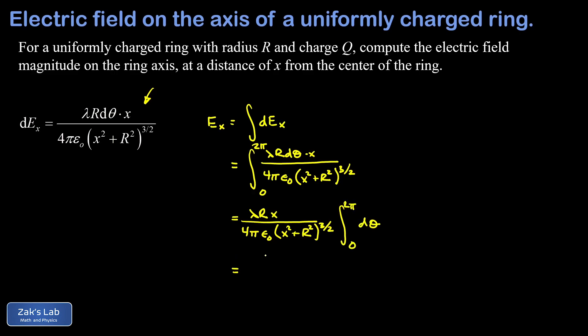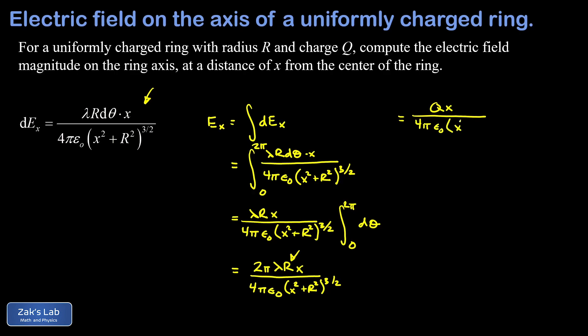We put 2π into the numerator and recognize that 2πR times lambda is just the total charge Q of the ring. So the electric field magnitude at a distance x from the ring on the ring's axis is: E = Qx / [4πε₀(x² + R²)^(3/2)].